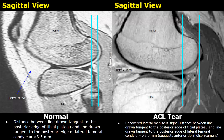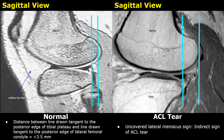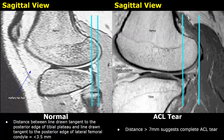This appearance is called the uncovered lateral meniscus sign, because the lateral meniscus appears to be uncovered by the tibial plateau. It is an indirect sign of ACL tear. In this case the distance was more than 7 millimeters. When this distance is more than 7 millimeters, it suggests a complete ACL tear.